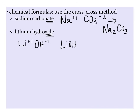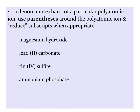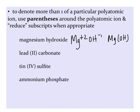In each of these examples, we have just one polyatomic ion in each chemical formula. But what if we want to indicate more than one polyatomic ion in the chemical formula? When this happens, we're going to put parentheses around the polyatomic ion. For example, magnesium hydroxide. Magnesium is a plus two charge, and here's hydroxide again with a minus one charge. When we crisscross our charges, we're going to want to have two hydroxides. So we put the hydroxide in parentheses, and then the two goes outside.